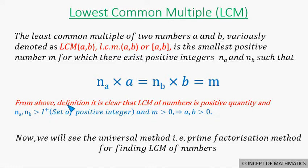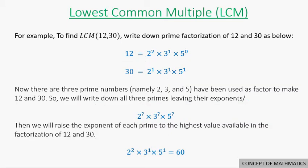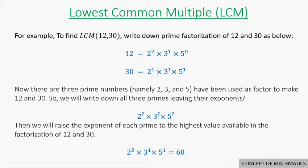Now we will see the universal method — that is, the prime factorization method — to calculate the LCM of given numbers. For example, to find the LCM of 12 and 30, write down the prime factorization of 12 and 30. 12 equals 2 to the second power times 3 to the first power times 5 to the 0th power. And 30 equals 2 to the first power times 3 to the first power times 5 to the first power. I have written 5 to the 0th power for 12 because 5 appeared once as a factor of 30.